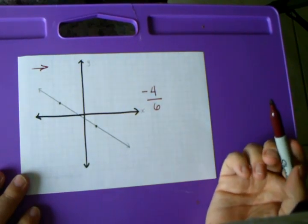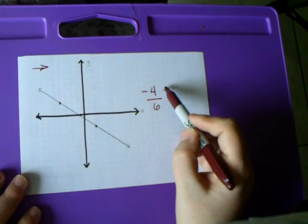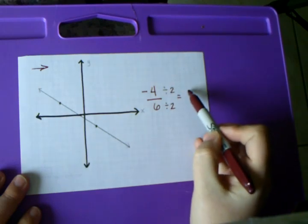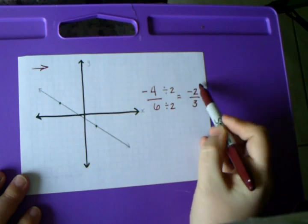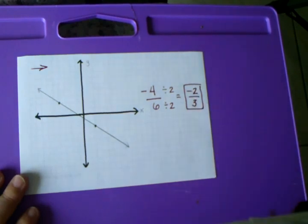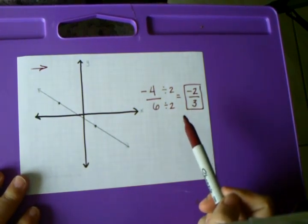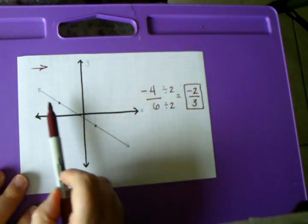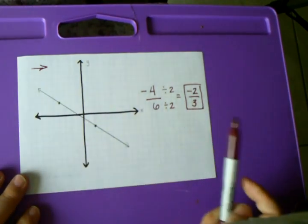If I can reduce it, I should reduce it. I divide top and bottom by two and end up getting negative two over three. That's my slope — negative two over three. The negative is very, very important because it tells somebody looking at just my slope that this was a downward-pointing line. Do not forget that negative.